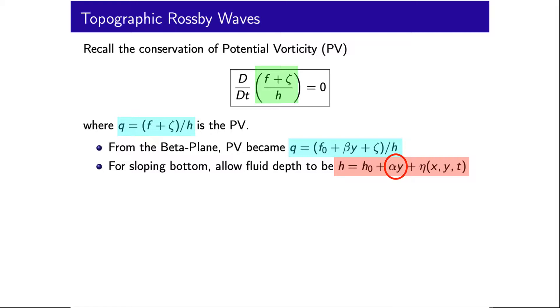Because we have no spatial structure to our coordinates, because f is constant in this exercise, we can choose our coordinates so that y is in the direction of the topographic slope. This helps later when we are looking to compare parallels between the topographic and planetary Rossby waves. So our expression for potential vorticity becomes Q equals f plus ζ on H₀ plus αy plus η.